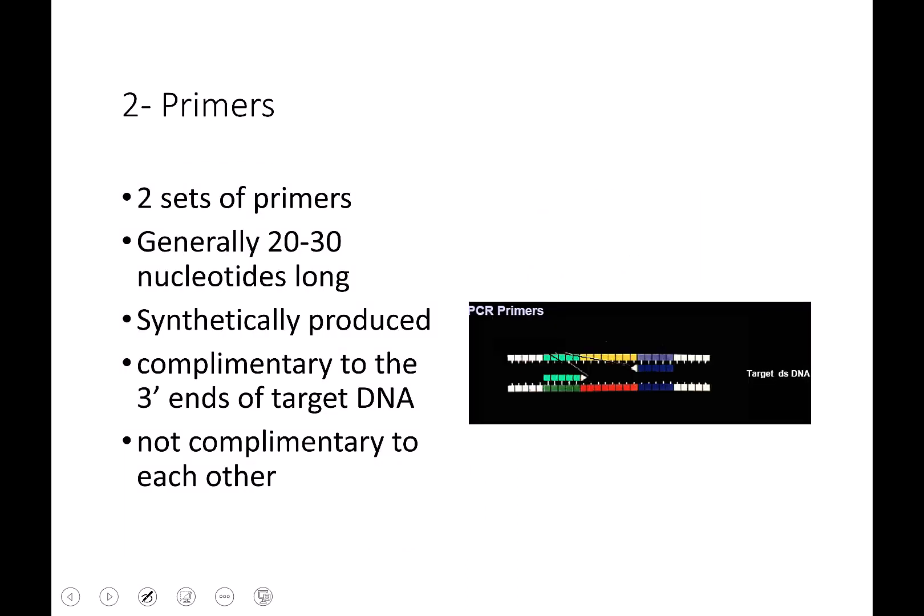So then you need two sets of primers, and this shows you the picture. You need one that binds on the five prime end, and the other one is going to bind on the three prime end. And these are going to be different sequences because what you have upstream of your gene and what you have downstream of your gene are two different pieces of DNA. So you don't have one primer that goes on both sides. You need two separate primers.